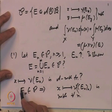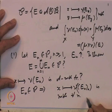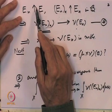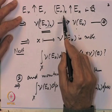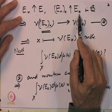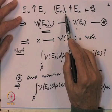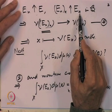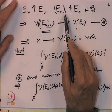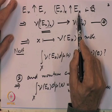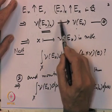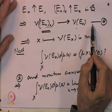Since each E_n belongs to class P, integrating nu(E_n_x) with respect to mu gives mu cross nu of E_n. So the integral equals the limit of mu cross nu of E_n. Since E_n is an increasing sequence and mu cross nu is a measure, this limit equals mu cross nu of E. Therefore, E belongs to P when E_n increases to E.